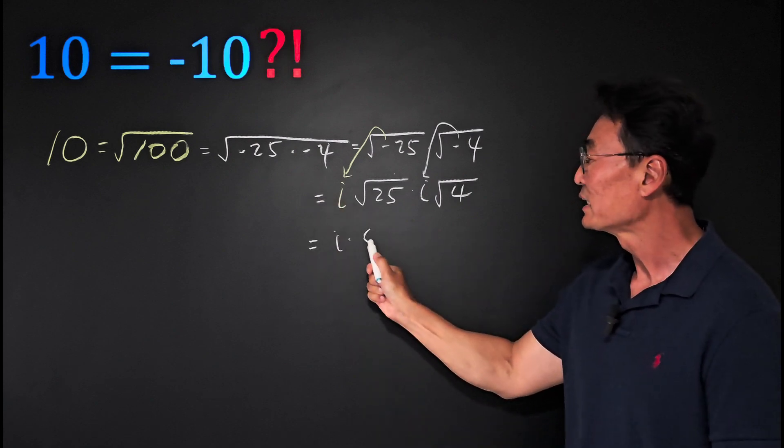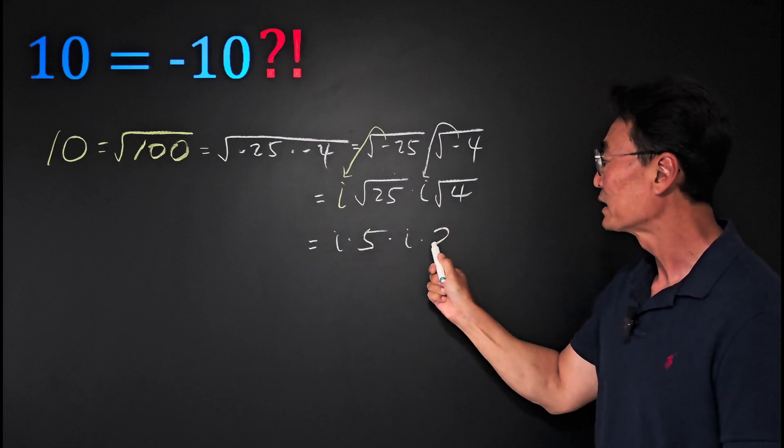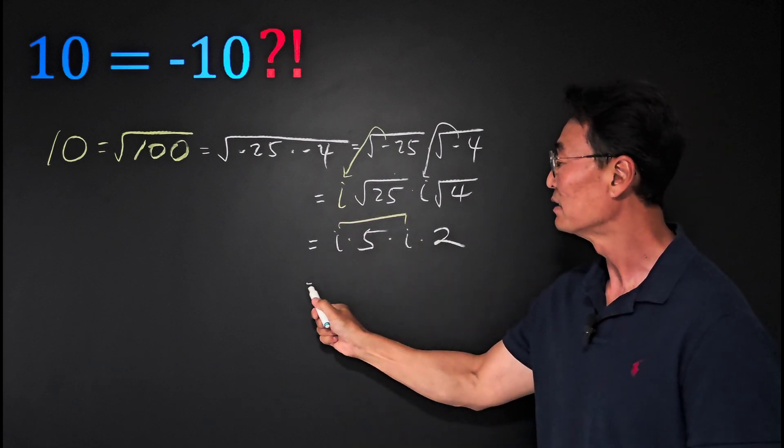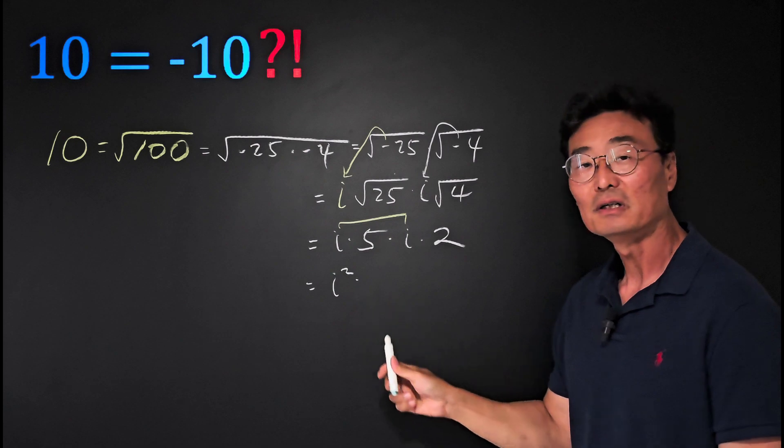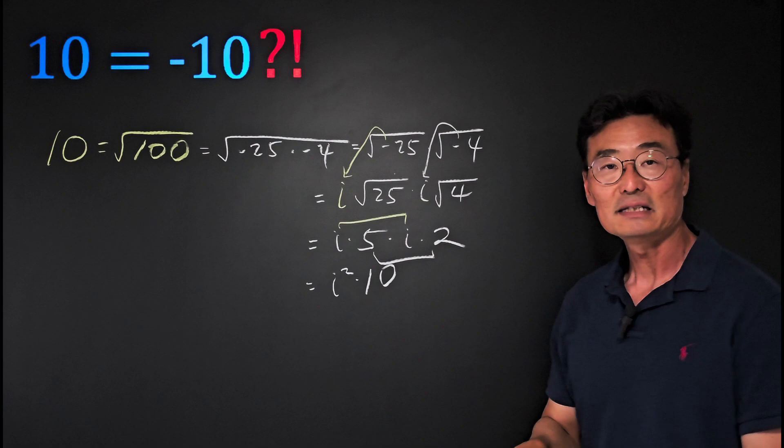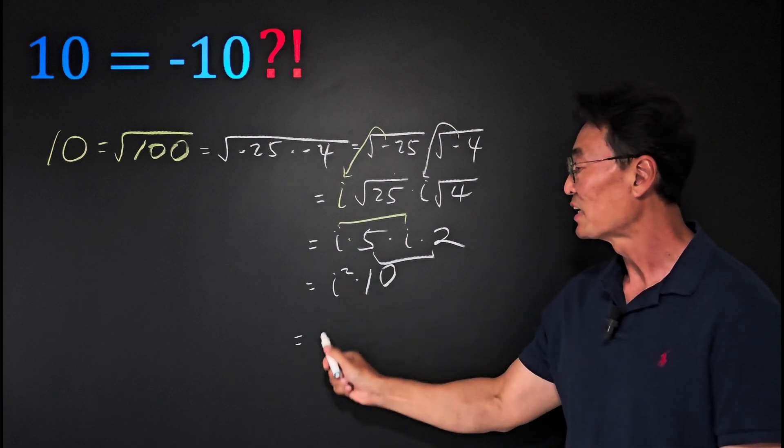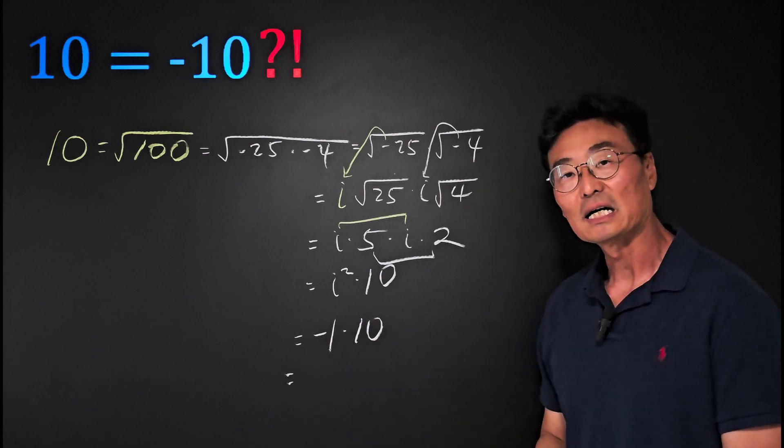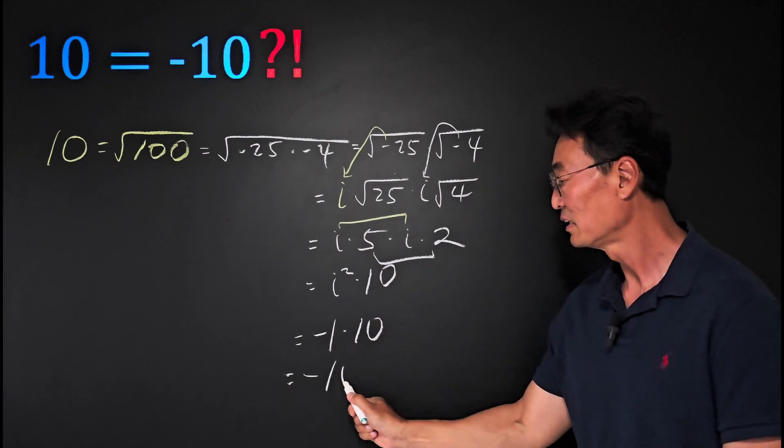This will turn into i times 5 times i times 2, and i times i is i squared, and 5 times 2 is 10. Of course, i squared is negative 1, and negative 1 times 10 is negative 10.